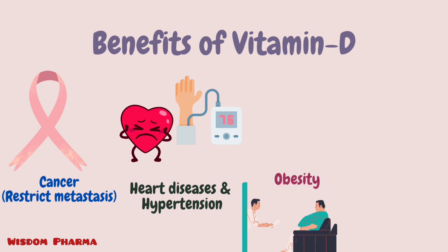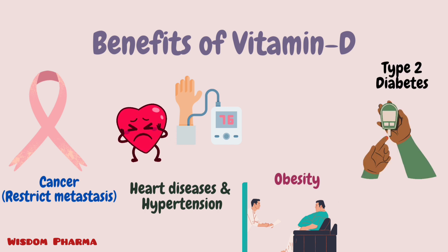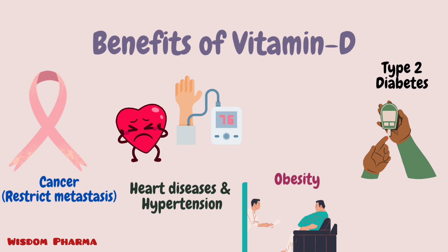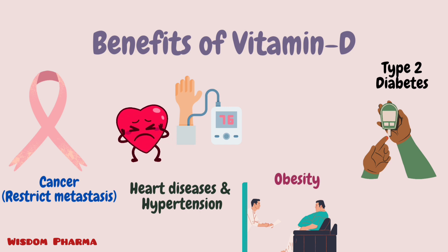Vitamin D can also help with obesity and diabetes. When we have vitamin D in the normal range, our insulin resistance decreases and our insulin sensitivity increases. The body can release insulin from the pancreas more effectively. This also helps in managing type 2 diabetes.